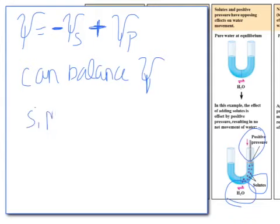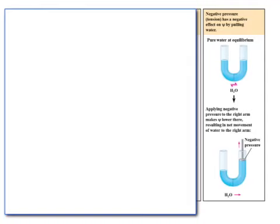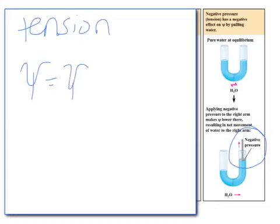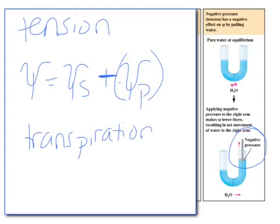This is very similar to the inside of the plant cell, because you're going to have solutes inside the plant cell, but you definitely also have that positive pressure happening inside the plant cell as well. The fourth scenario involves a negative pressure — essentially a tension on the right side of the tube. When there's a tension on the right side, I've made my pressure potential more negative. This is what's happening during transpiration: a negative pressure or tension builds up, making my pressure potential more negative.